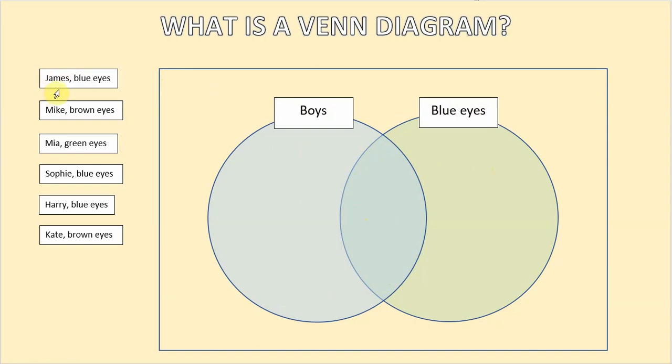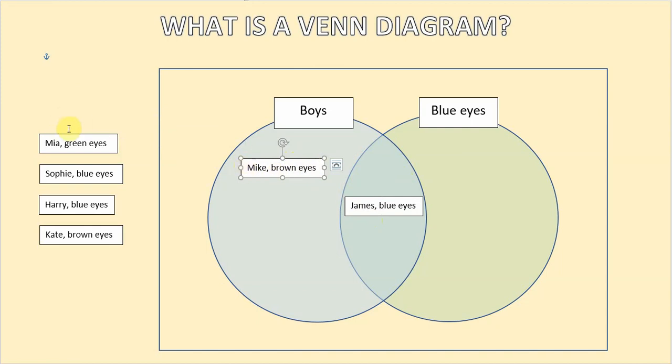So the first child that we're going to sort is a boy called James who has got blue eyes. So James is going to go inside the intersection of the two sets because he is both a boy and has blue eyes. Our next child to sort out is another boy who's got brown eyes this time. So Mike is going to go here because he is a boy but he doesn't have blue eyes so he can't go in the intersection he just goes in the boys set.